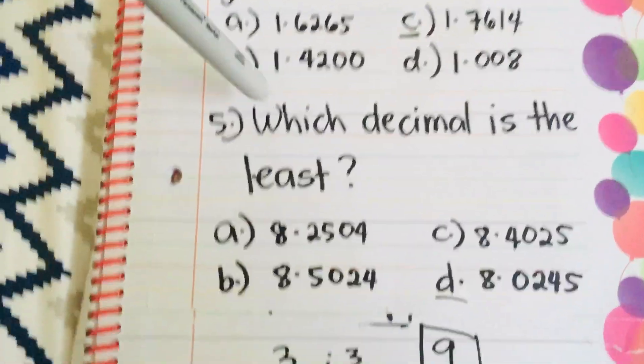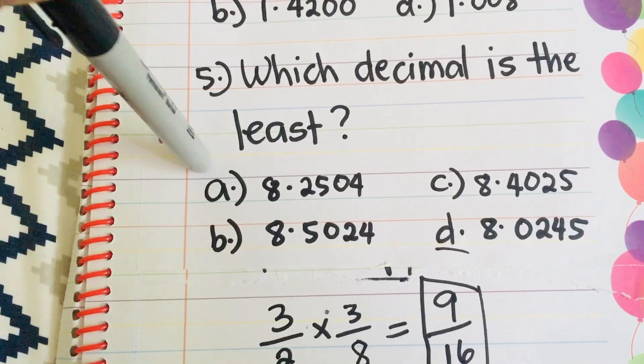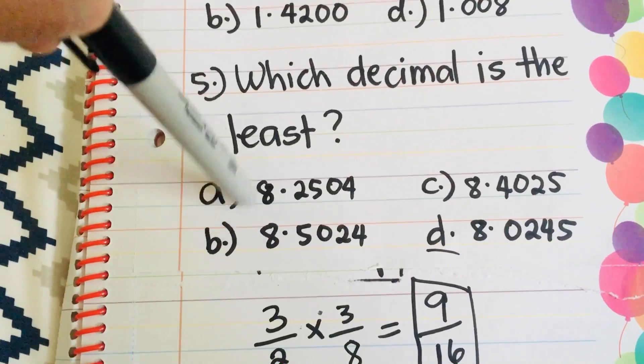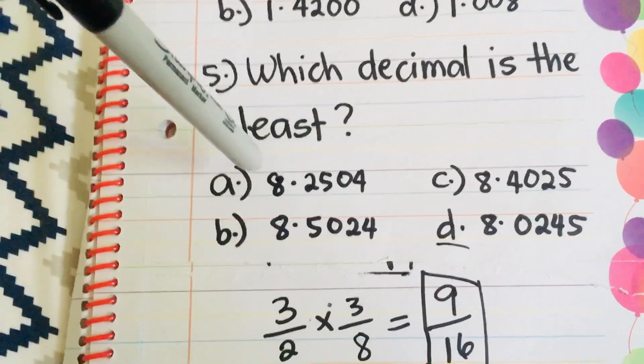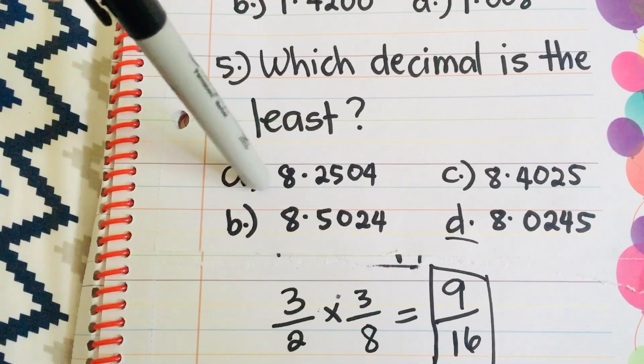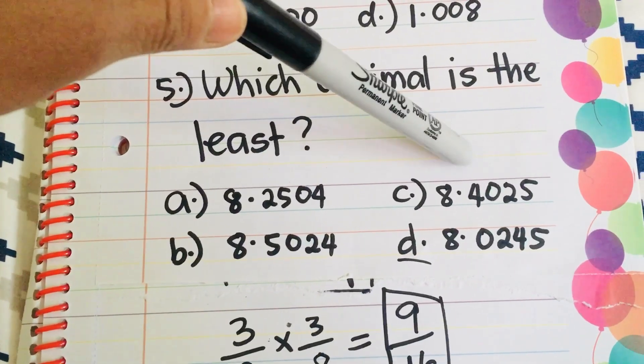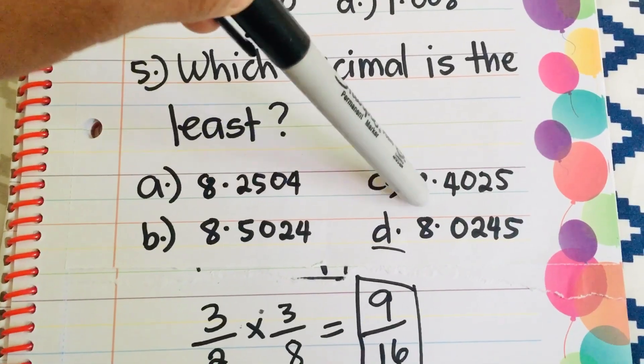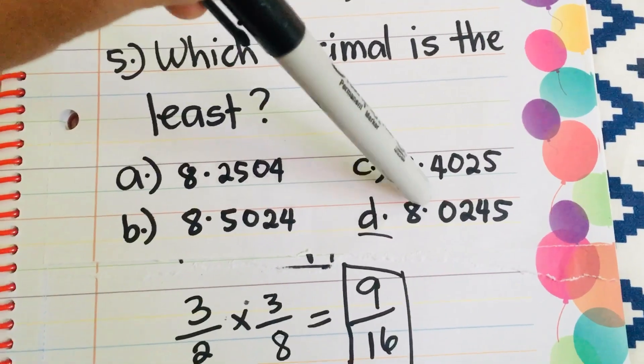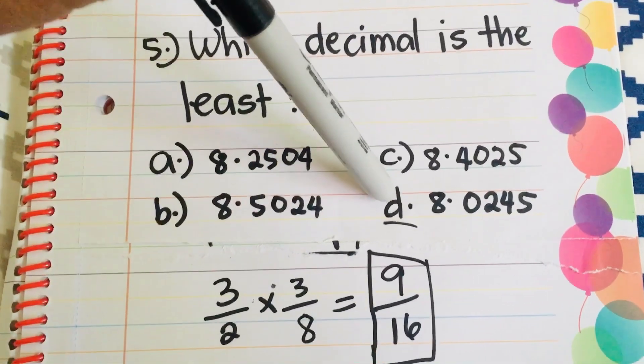Then, number 5, which decimal is the least? So, you just have to think which one is the least number after the decimal point. So, they are all the same, 8 point something. And this one, letter A is 8.2504, and B is 8.5024, C is 8.4025, and D is 8.0245. As you can see, 0 is next to the decimal point, which is less than the rest of the numbers. So, the answer is letter D.